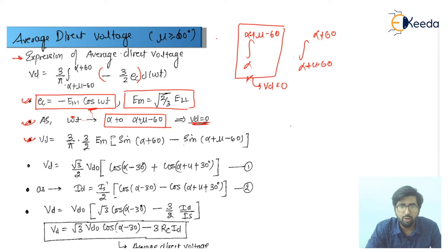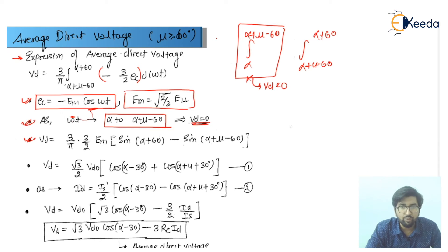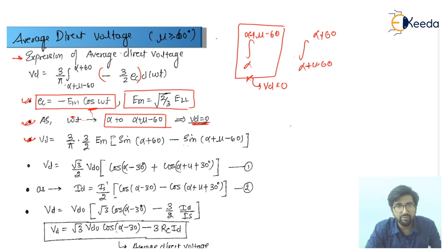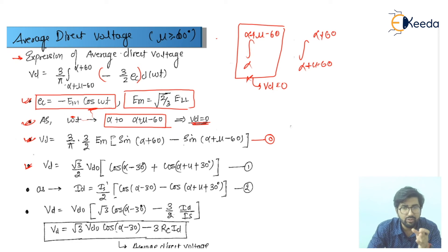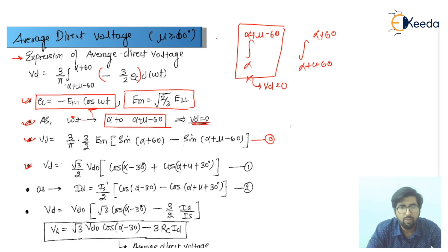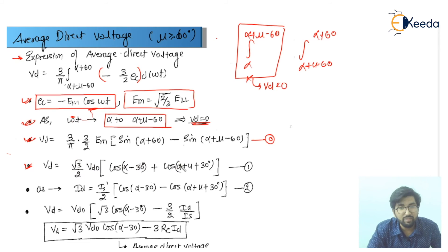After simple integration we will get VD equal to (3/π)·(3/2)·EM·[sin(alpha + 60) minus sin(alpha + mu minus 60)], because the integration of cos(omega·t) gives sin(omega·t). After putting in the integration limits and taking the minus sign inside, we can simplify — changing from sine to cosine — and the coefficient of the bracket becomes (3·root(3)/π)·(2·EF), giving us a simplified expression.